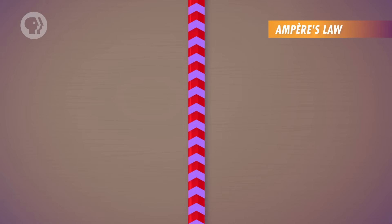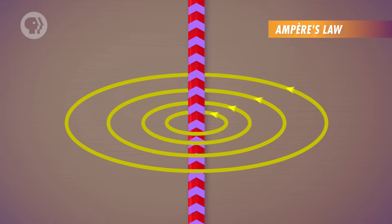So let's say you have a long, straight wire with a current running through it. The current will create a magnetic field, circling the wire. That magnetic field decreases the further you are from the wire.